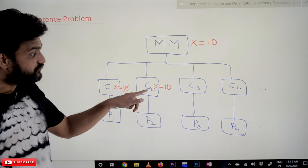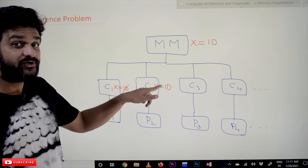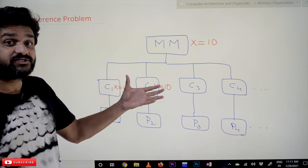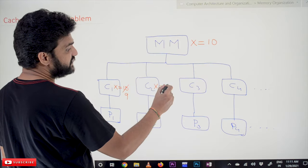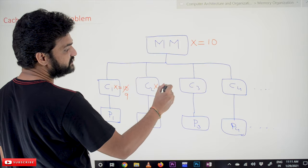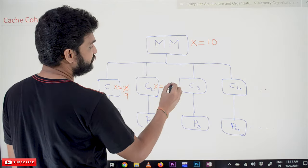Now C2 is having the value of X. So whatever operation that C2 is trying to do will be made on the value 10. So this is trying to bring inconsistency. For example, if this has incremented the value of X by 2.